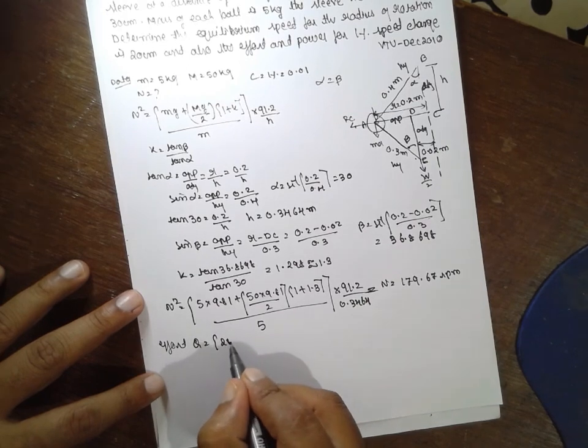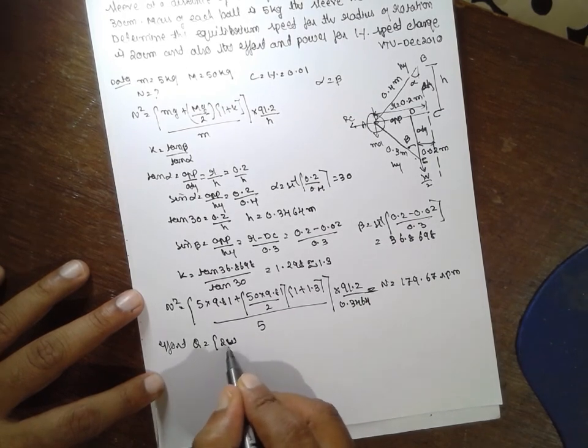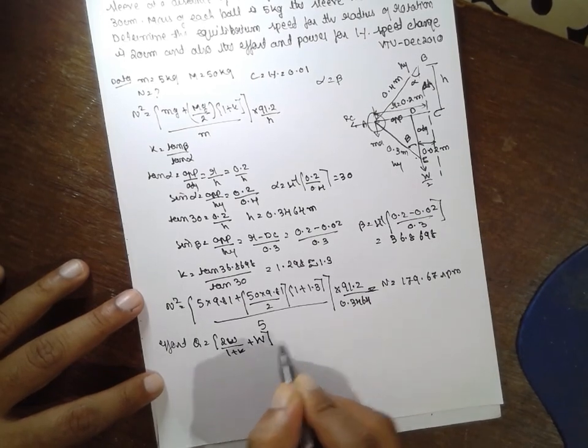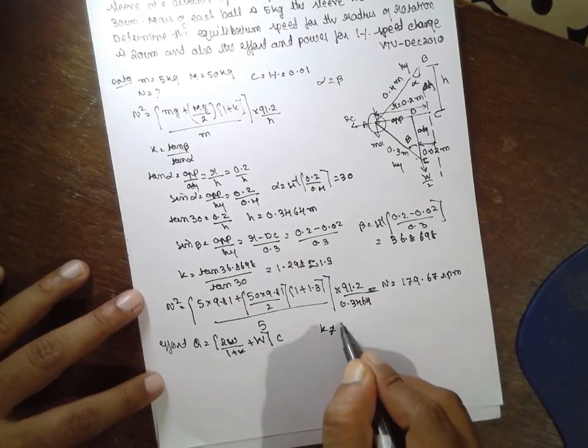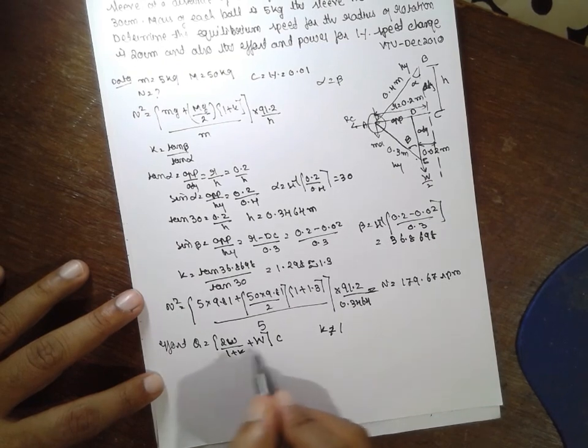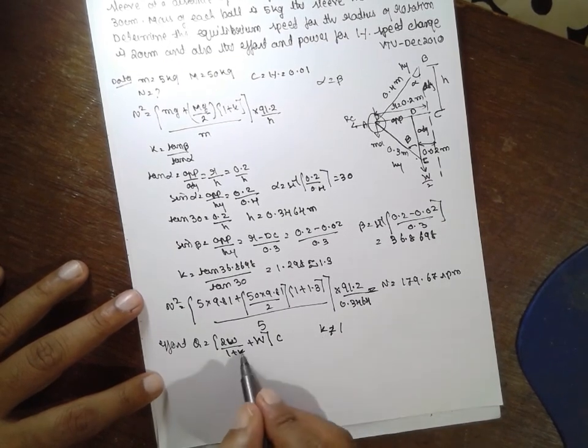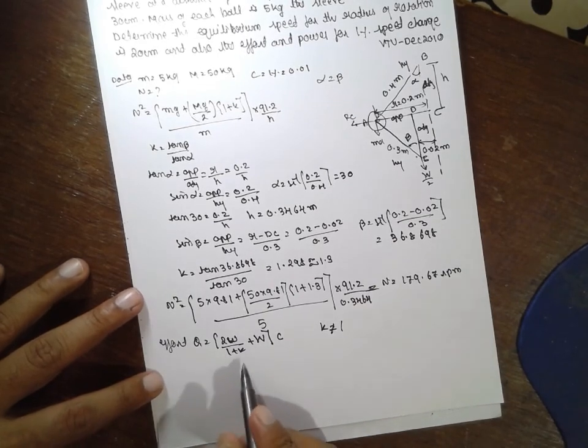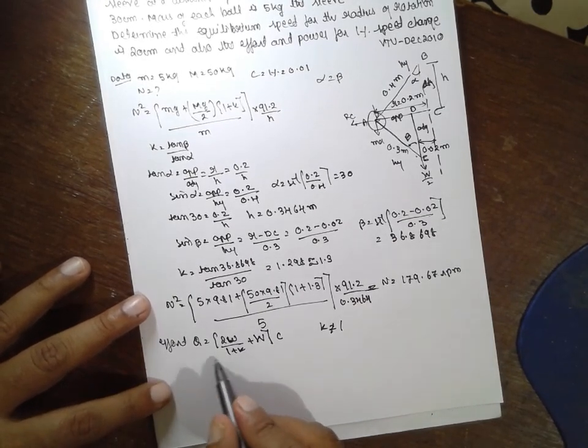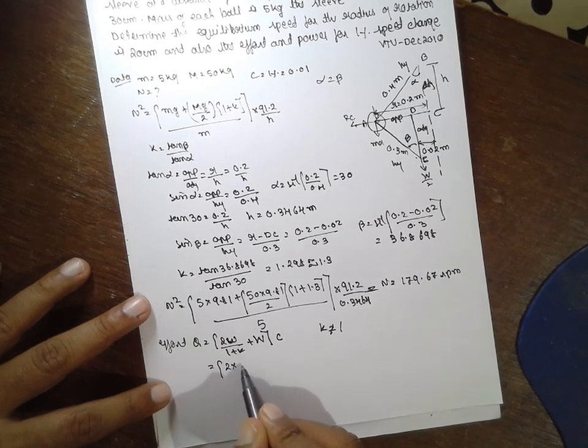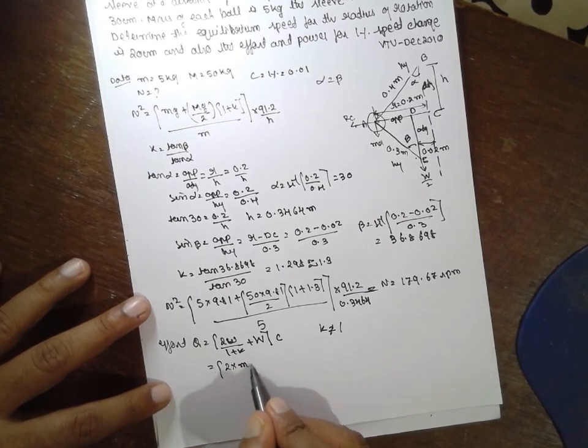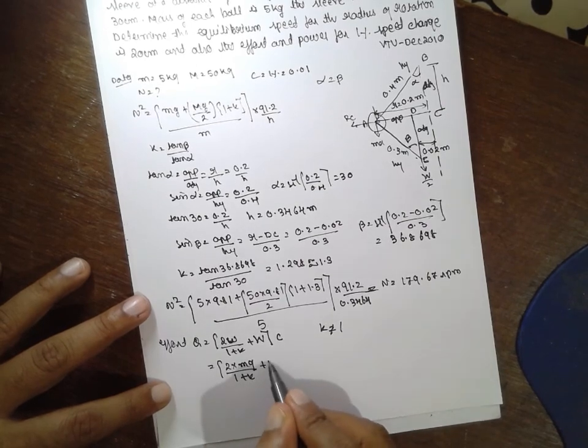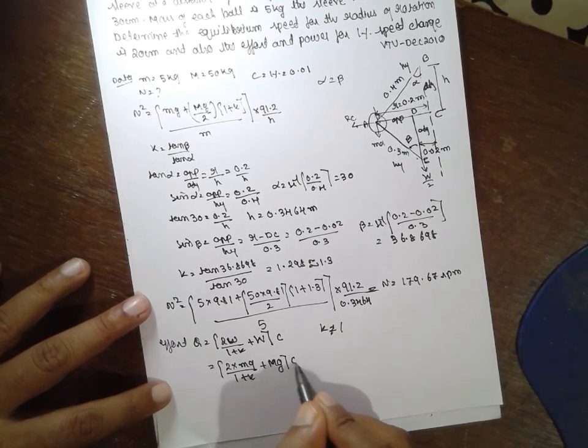G is equal to 2 small w plus 1 plus k plus capital W into c when k is not equal to 1. When k is equal to 1 then 2 will cancel small w plus capital W will remain. Next, 2 into mg divided by 1 plus k plus capital mg into c.